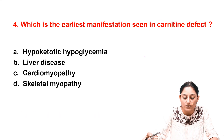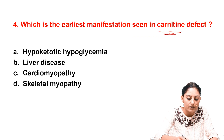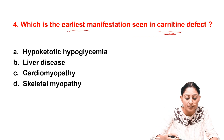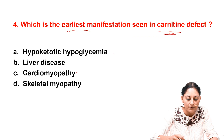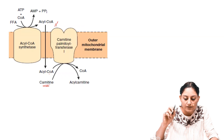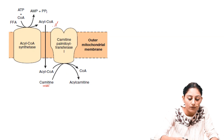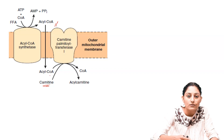Moving on to the fourth question: what is the earliest manifestation seen in carnitine defect? The options are hypoketotic hypoglycemia, liver disease, cardiomyopathy, and skeletal myopathy. Long-chain fatty acids cannot directly enter the mitochondria for beta oxidation. First, they are converted into acyl-CoA form by acyl-CoA synthetase, allowing them to cross the outer mitochondrial membrane.